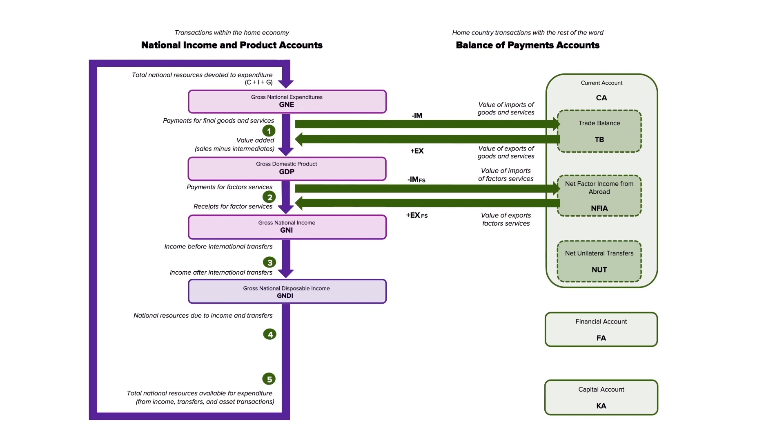Now one more step to take us down to gross national disposable income is a term called NUT — net unilateral transfers. It's not a big number for most large developed economies like the U.S., but it is for some emerging or frontier economies. What it represents is net transfers: if you're given gifts, foreign aid, or people are working here and remitting payments back to a home country, those flow out. On the other side, if we're receiving gifts or net transfers from somewhere else, that's an inflow. You take the net of those two numbers and you arrive at gross national disposable income.